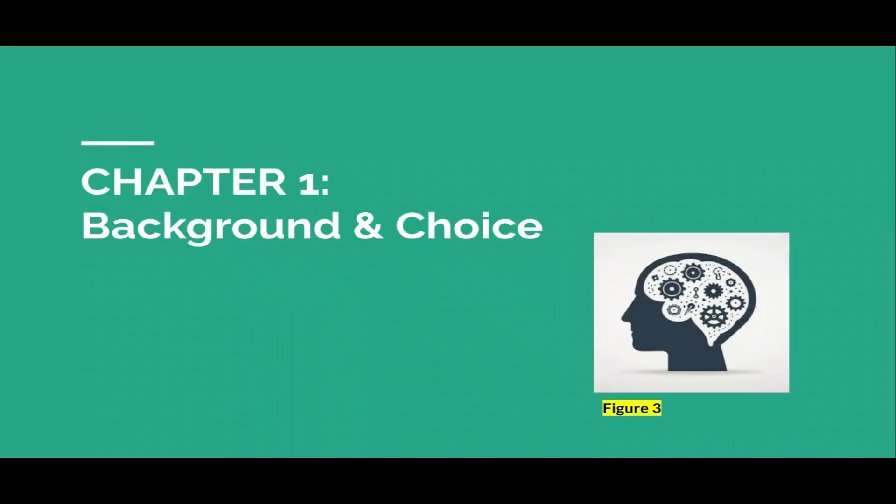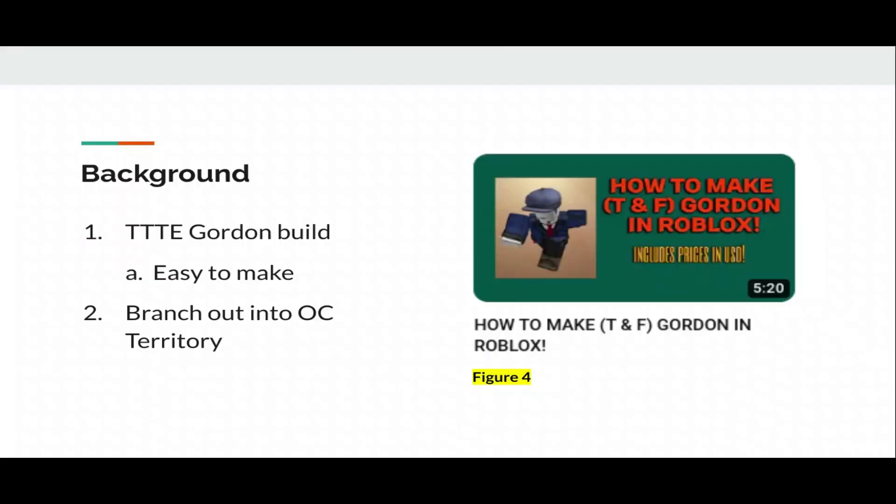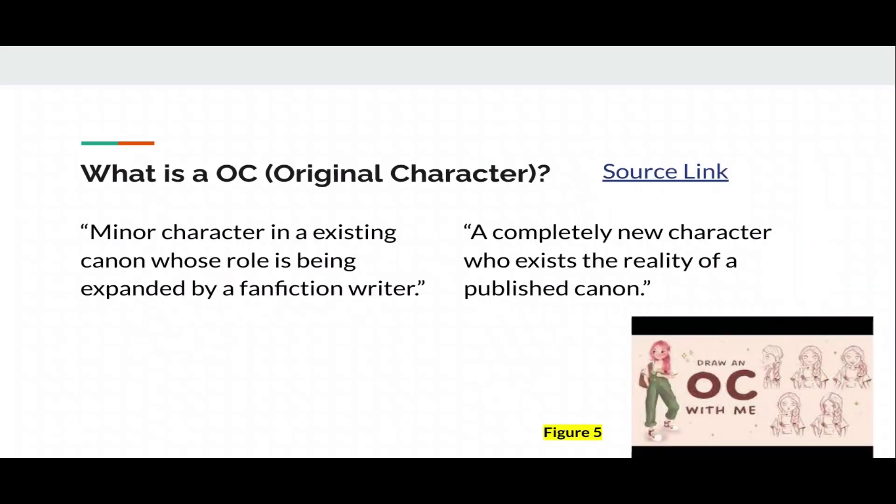As I said earlier, we're starting with chapter one, background and choice. So I got this idea because I already made the Gordon in Roblox. I thought this was really fun. Like I know it didn't get a lot of views, but this was like one of the first times that I made a character and started cosplaying on Roblox because I usually don't do that. I did it because it's easy to make. A lot of this was like stupid cheap. So I decided to branch out into OC territory.